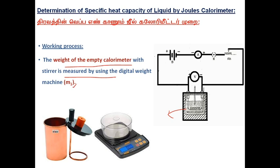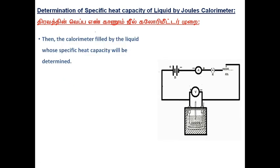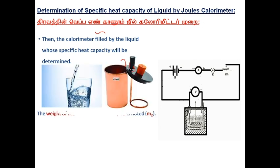Then find the empty calorimeter mass M1. The calorimeter is filled with liquid, approximately two-thirds. For example, take water into the calorimeter and find the mass of the calorimeter and water. It is taken as M2.